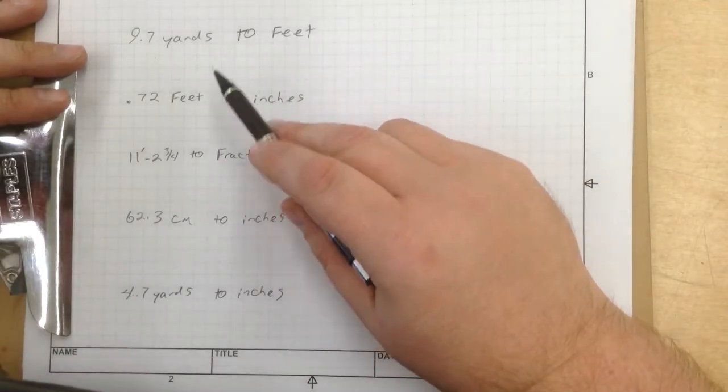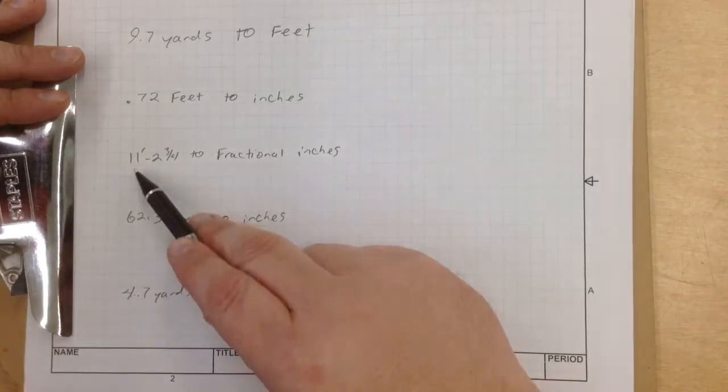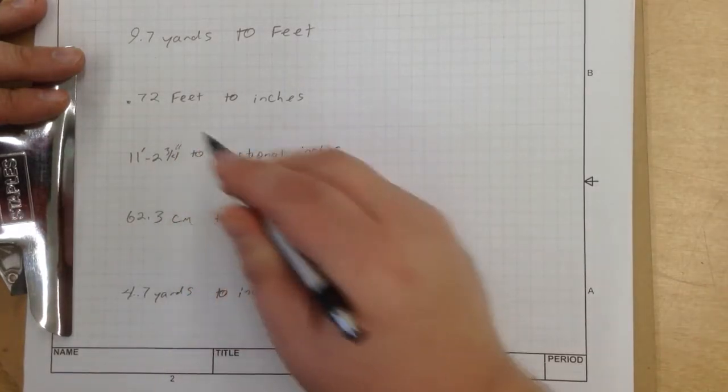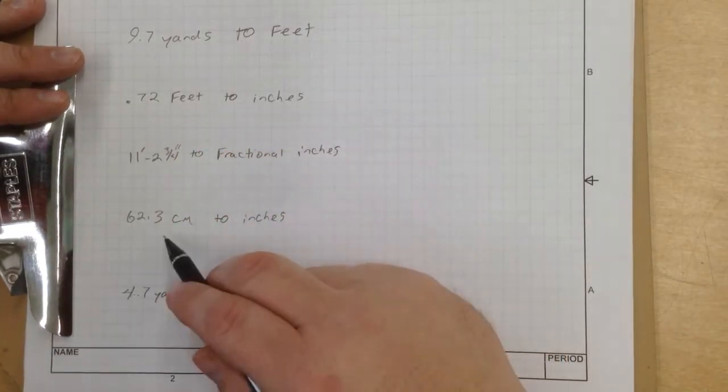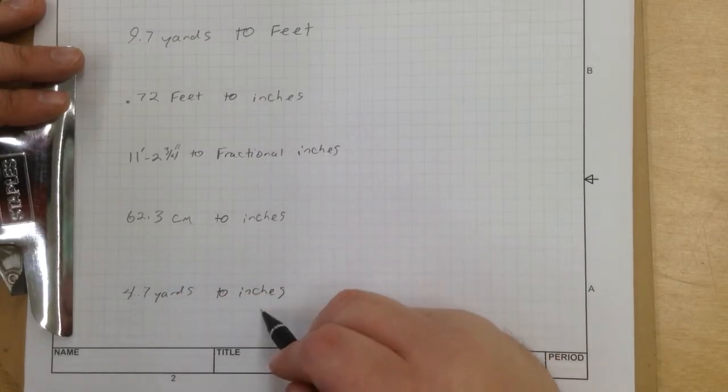We're going to do 9.7 yards to feet, 0.72 feet to inches, 11 feet 2.75 inches to fractional inches, 62.3 centimeters to inches, and 4.7 yards to inches.